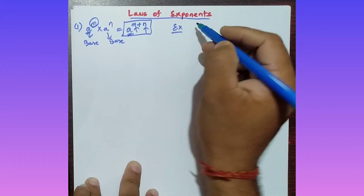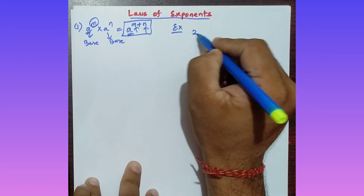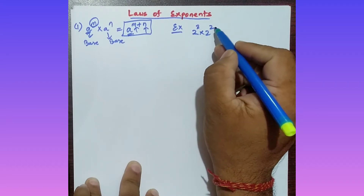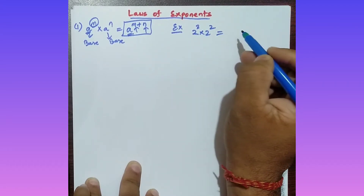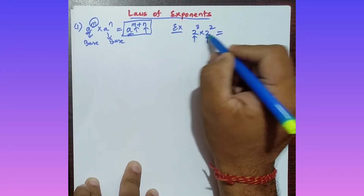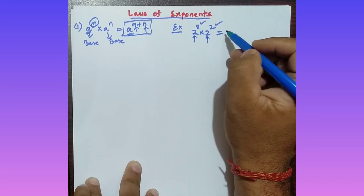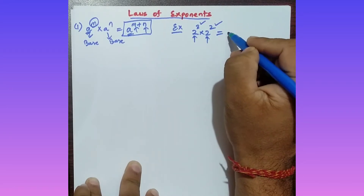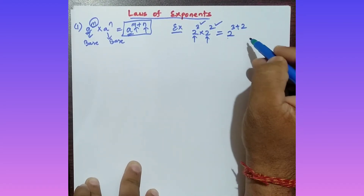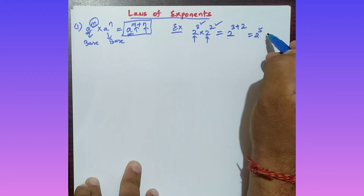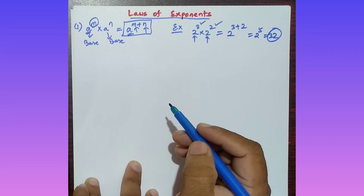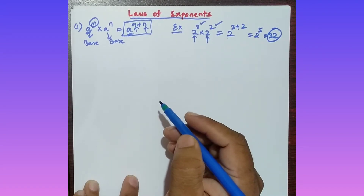Here's a simple example: 2 to the power 3 multiplied by 2 to the power 2. The bases are the same (both 2), but the powers are different. So you apply the formula: 2 to the power 3 plus 2, which gives 2 to the power 5, and 2 to the power 5 equals 32. That is your answer.